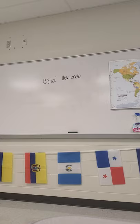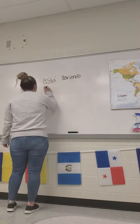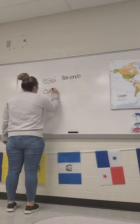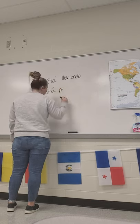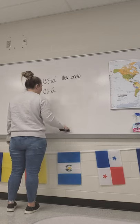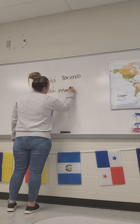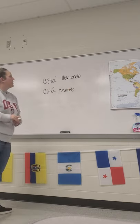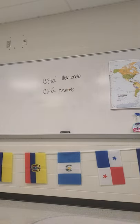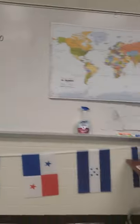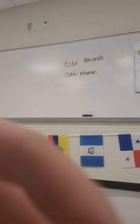Let's go ahead and do an -ar one — nevar, which means snow. So if I want to say 'it is snowing,' it would be está nevando. It does not get any more difficult than that when it comes to the progressives.